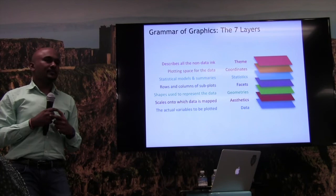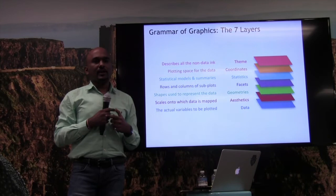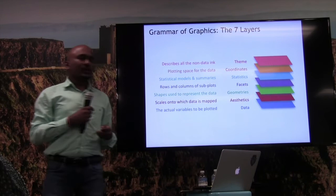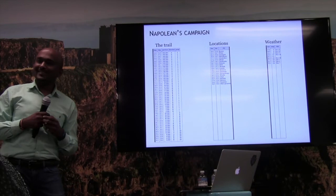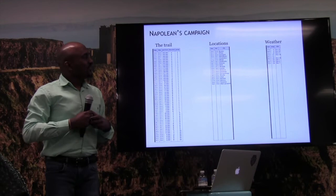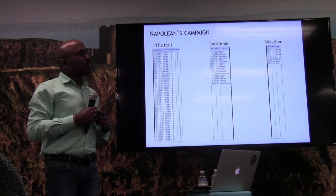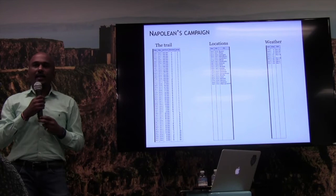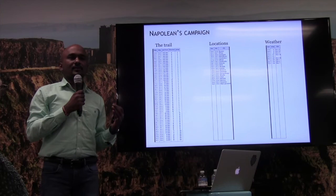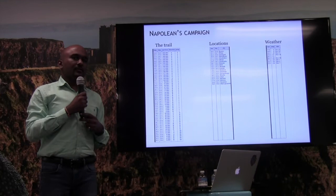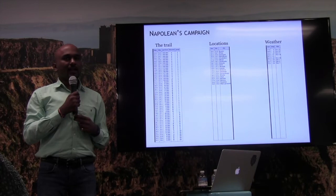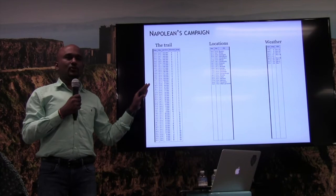Now, having learned this, we'll apply it to a classic visualization. How many of you are familiar with Napoleon's March? This is the data that Charles Minard used. This visualization is about 150 years old — a hand-drawn visualization which effectively summarizes the disastrous campaign of Napoleon's invasion of Russia. Many visualization experts still consider this one of the best visuals ever created. And if you look at the underlying data, it's just three small tables that fit into one slide — almost similar to the data we saw earlier.